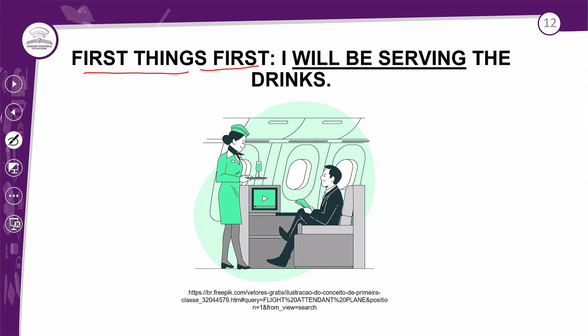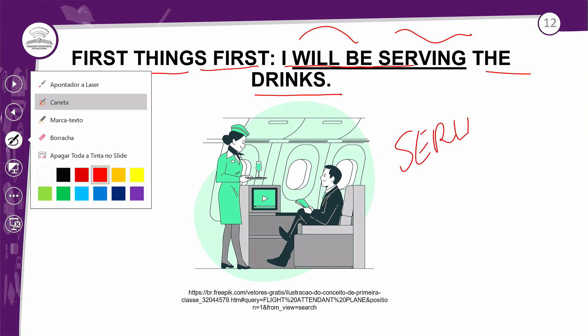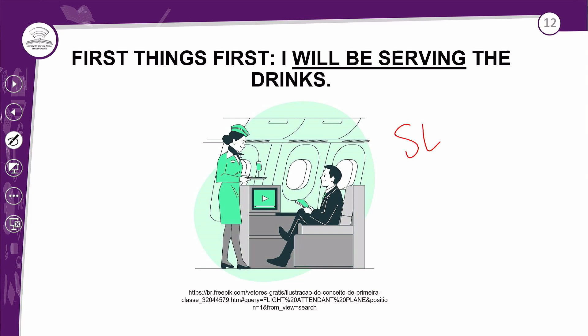'First things first' — a primeira coisa que ela vai fazer: 'I will be serving the drinks.' Antes dos alimentos, ela vai servir os drinks. 'Serve' também é um verbo que termina com E, então perde o E para receber o ING. Praticamente todos os verbos aqui terminam com E — não foi planejado, mas você vai lembrar: verbos que terminam com E perdem o E para colocar o ING.